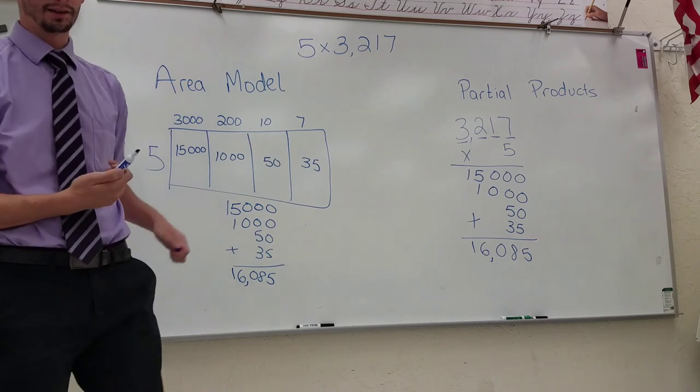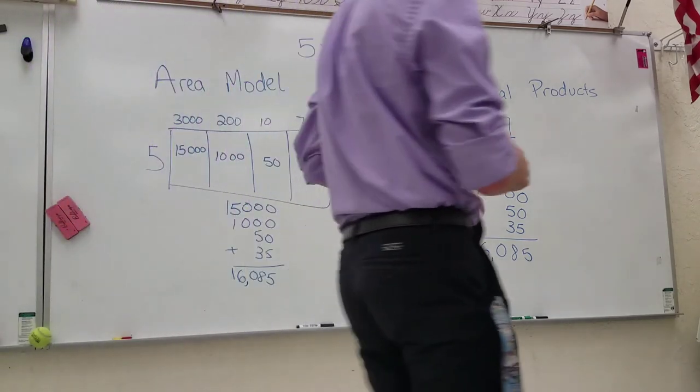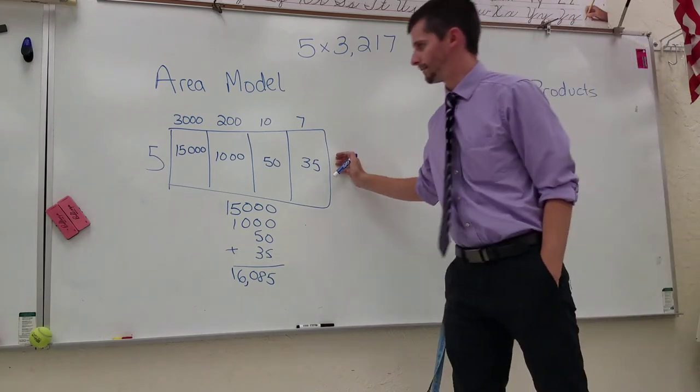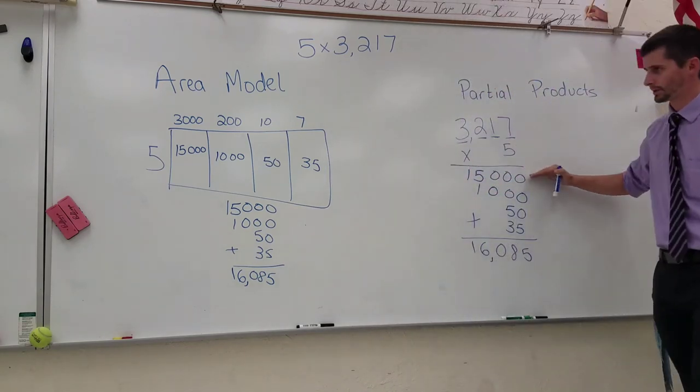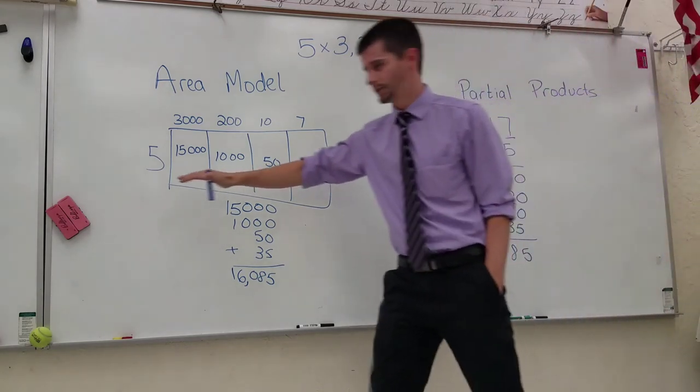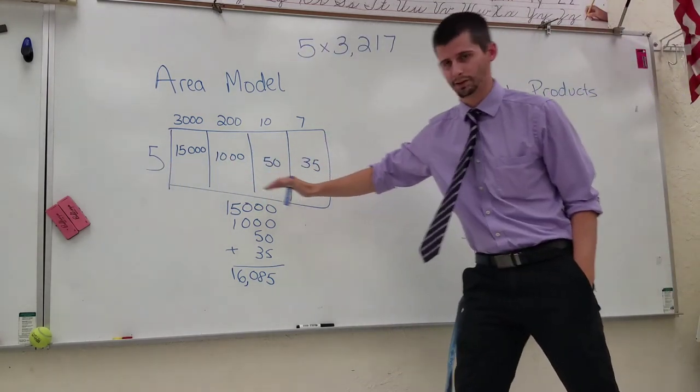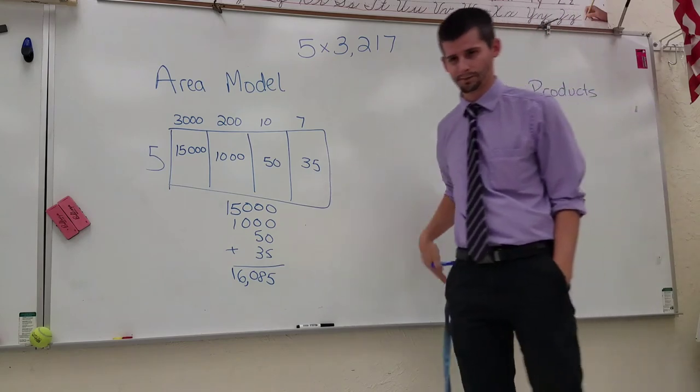So both ways get the same answer. It's just one way we're doing more mental math than the other way. But if you notice, all of our partial products are the same. I have 15,000 here, 15,000 here. I have 1,000 here, 1,000 here. 50 here, 50 here, 35, 35.